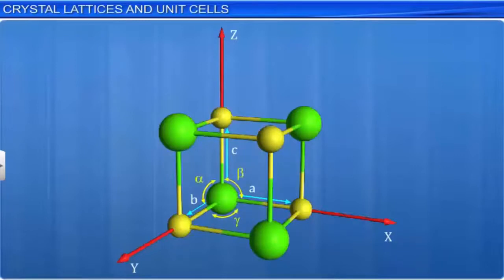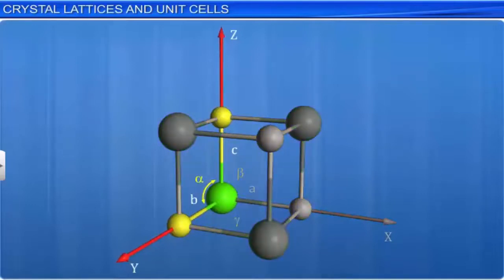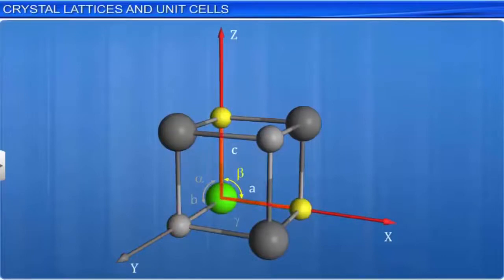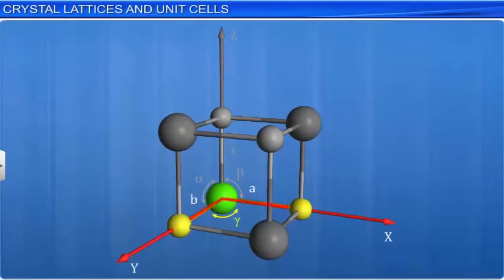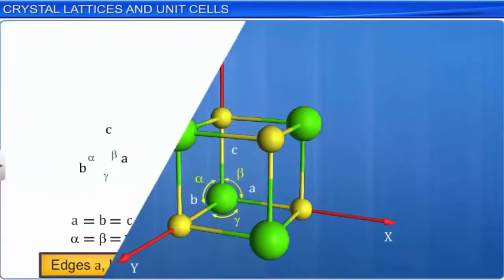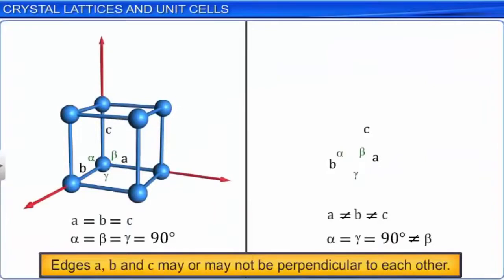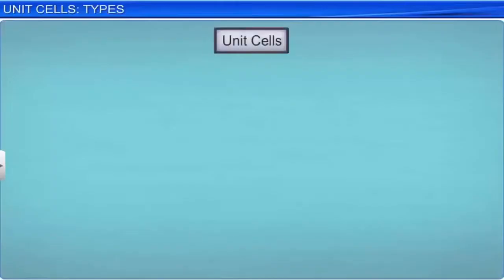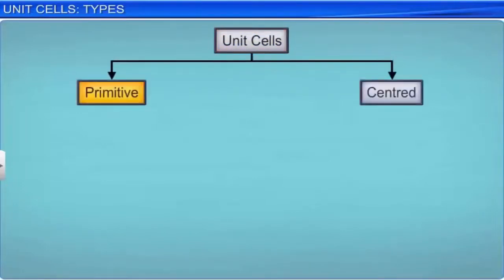Alpha is the angle between edges B and C, beta is the angle between edges C and A, while gamma is the angle between edges A and B. Edges A, B, and C may or may not be perpendicular to each other. Unit cells can be classified into two categories: primitive unit cells and centered unit cells.